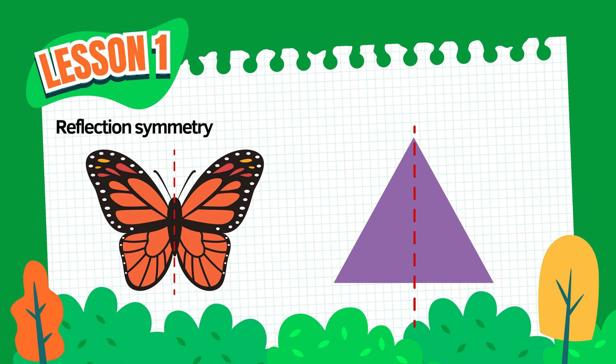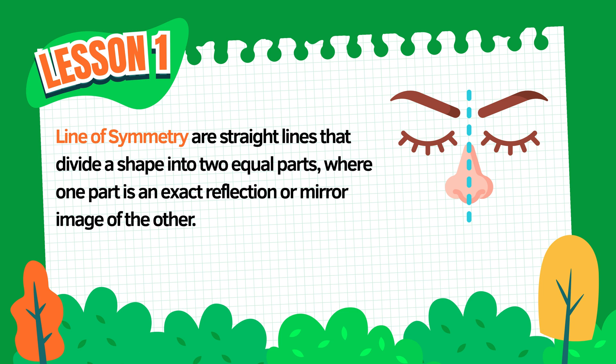So remember, if one side is the mirror image of the other side, just like what you see in these examples, that's reflection symmetry. A line of symmetry is a straight line that divides a shape into two equal parts where one side is an exact reflection or mirror image of the other.